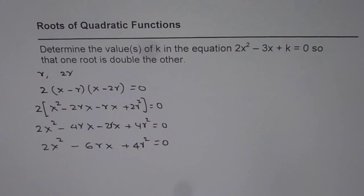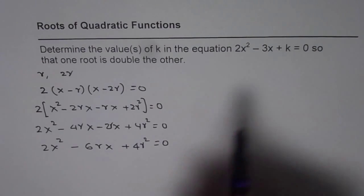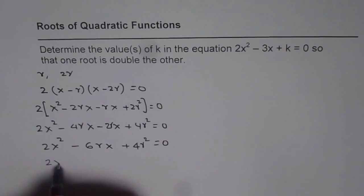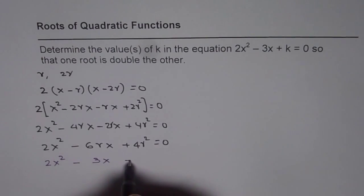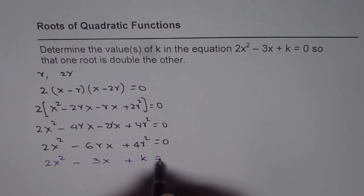So, that is our quadratic equation in which one root is twice the other. What we need to find? Value of k. So, let us compare. So, the given equation is 2x squared minus 3x plus k equals to 0.